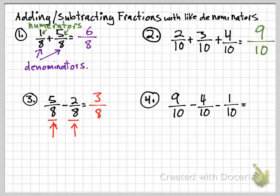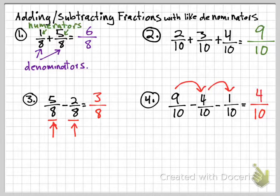Number 4, again the denominator is 10, so we keep the 10 and we just subtract the numerators. 9 minus 4 is 5, and 5 minus 1 is 4. 4 tenths. And that's the lesson for adding and subtracting fractions with like denominators.